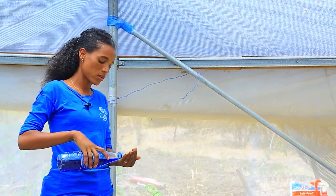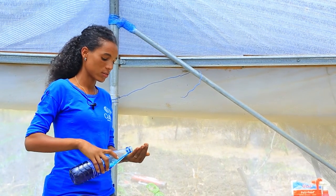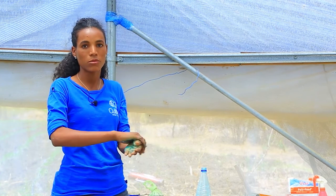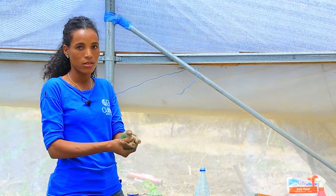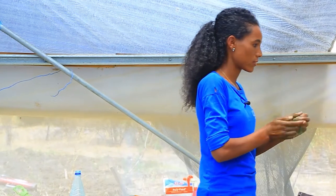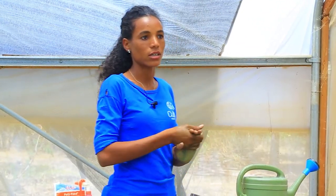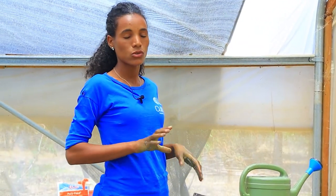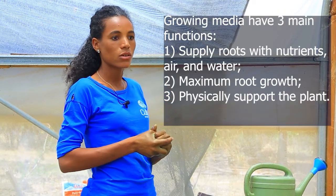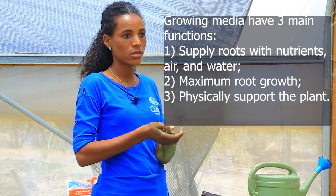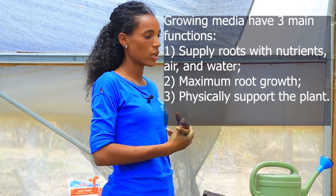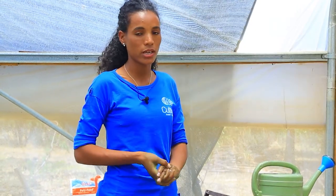We use alcohol for sanitation. The advantage of alcohol is that it controls contamination and kills bacterial disease. After that, we use industrial growing media here in the greenhouse. They have their own advantages — we are using peat moss and vermiculite.